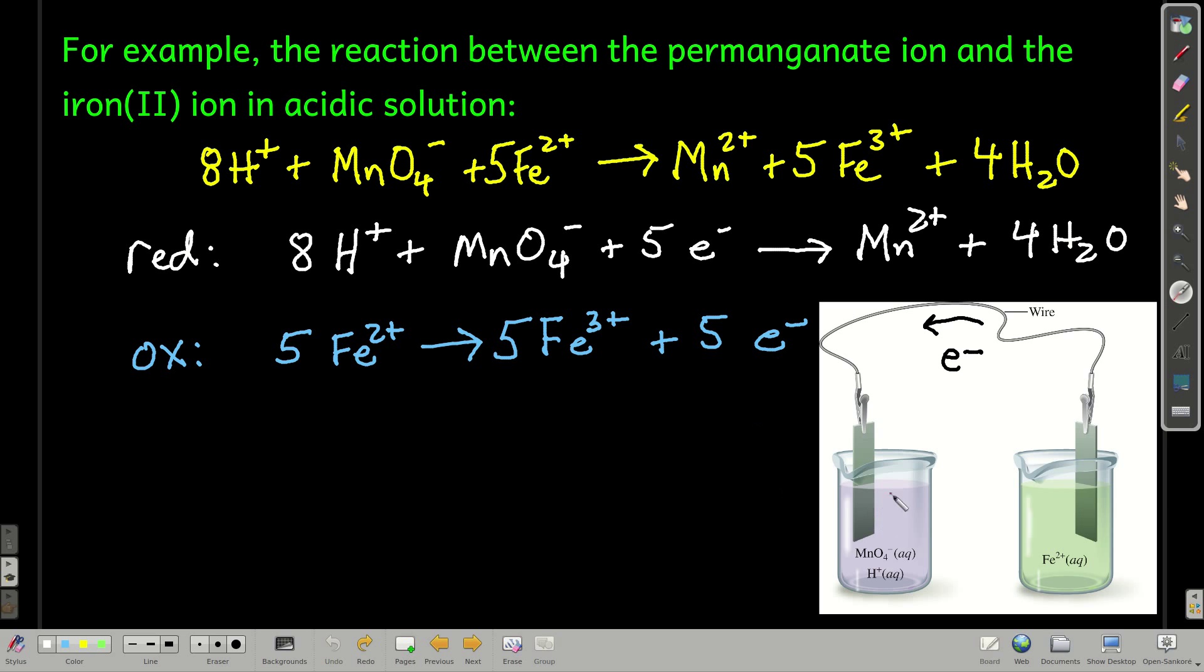Now, if we separate the half reactions into beakers and connect them by a wire with a metal plate called an electrode in there, what will happen is at first, if you look really carefully, you'll see electrons being transferred from the iron two onto the permanganate. But what happens is real quickly, you get a buildup of charge.